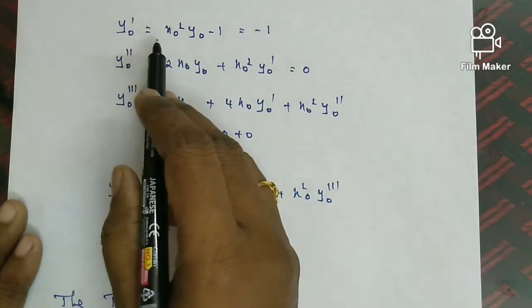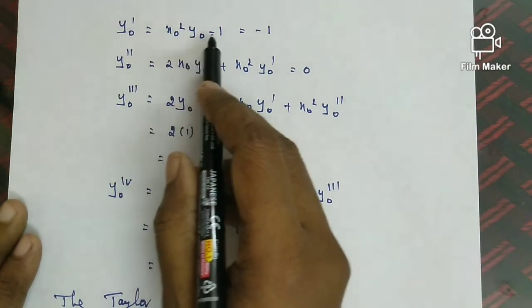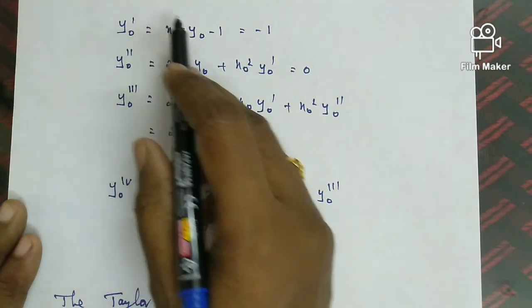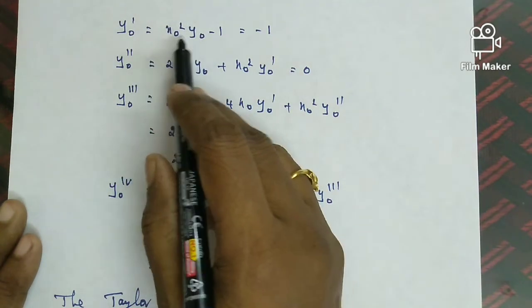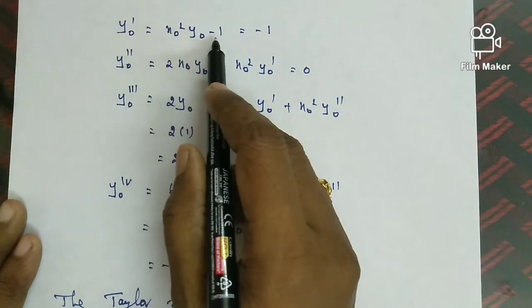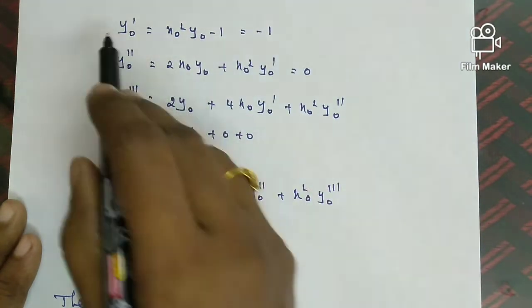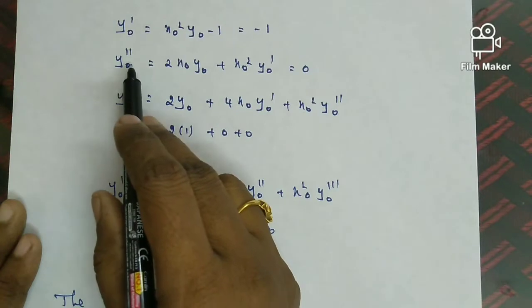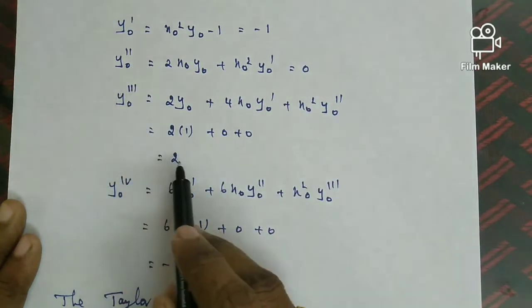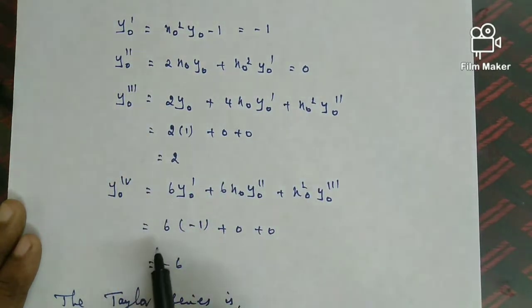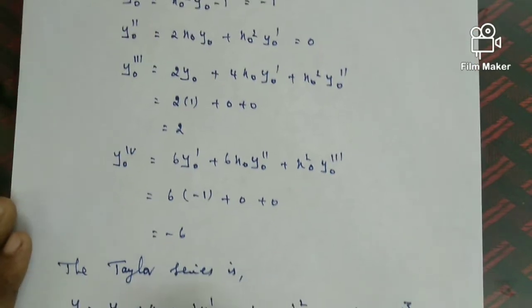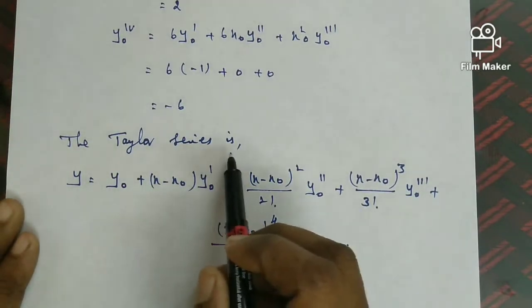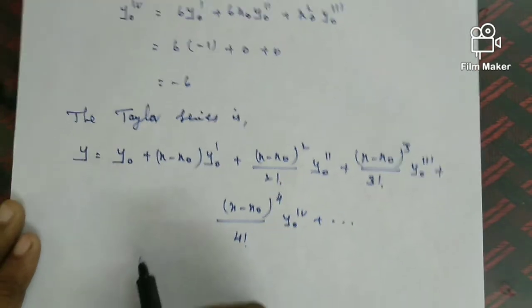Now substitute x equal to x0 (which is 0) and y equal to y0 (which is 1) into the derivatives. y0 dash equals 0 squared times 1 minus 1 equals minus 1. y0 double dash equals 0. y0 triple dash equals 2. y0 fourth derivative equals minus 6.